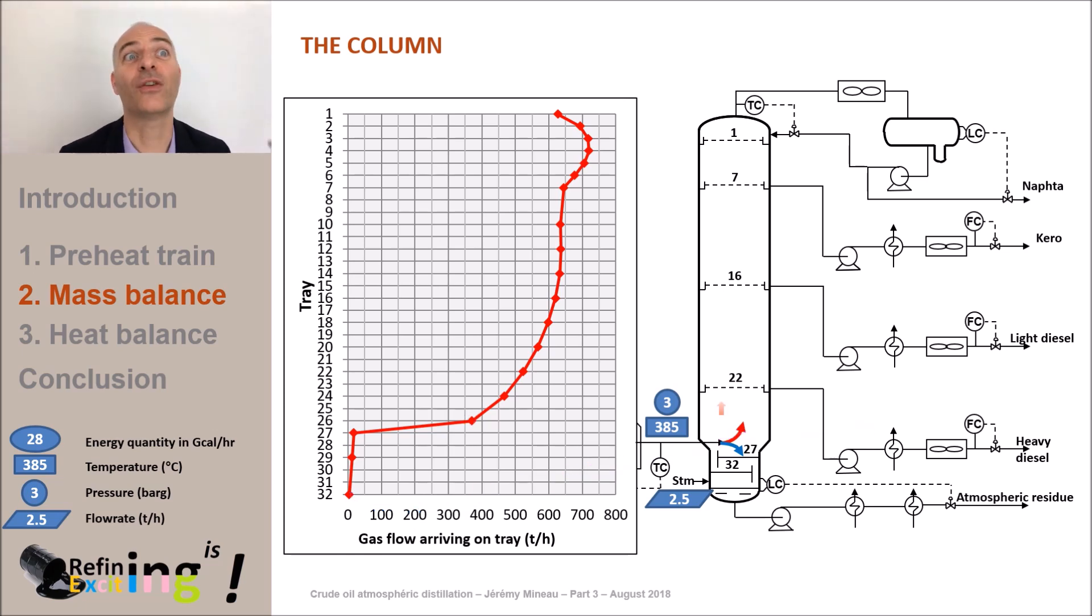Then, the gas rises in the tower and its flow increases as it goes up in the tower. The upward gas vaporizes the lighter hydrocarbons of the liquid that it will cross as the gas rises. Thus, on tray 1, 630 tons per hour of gas arrives.